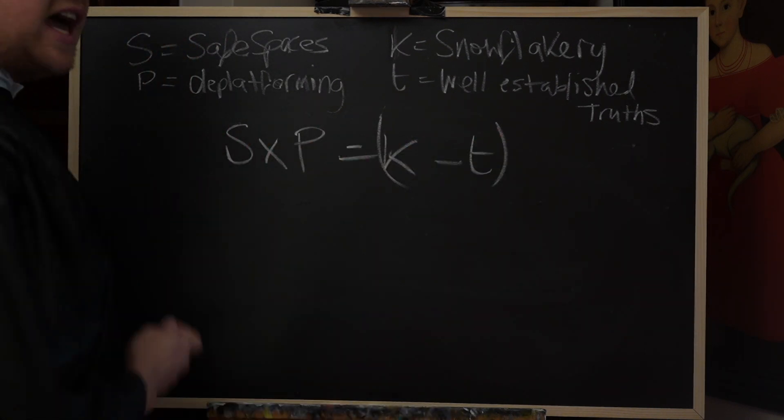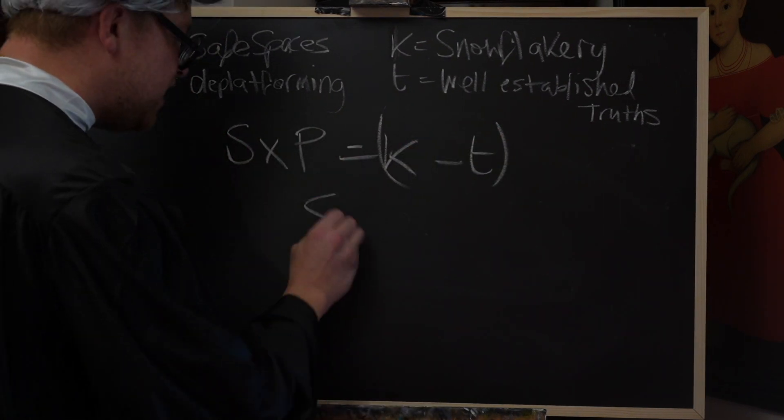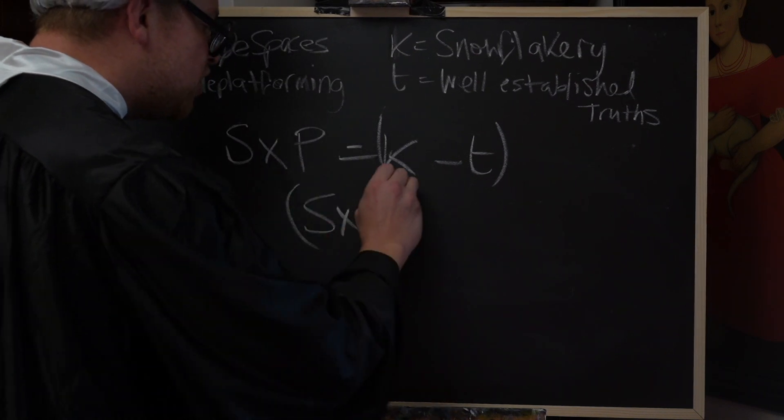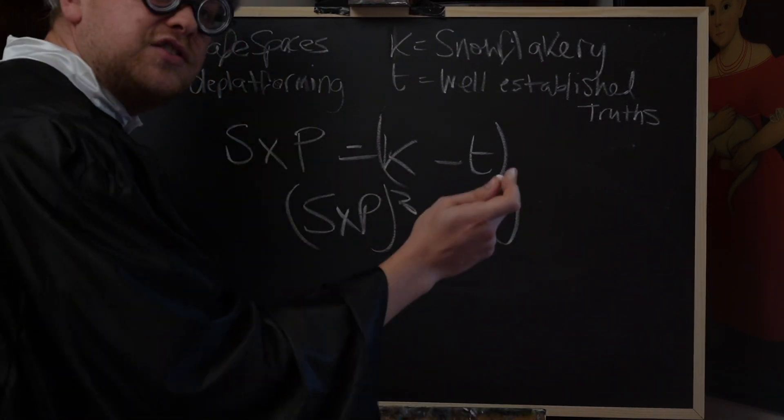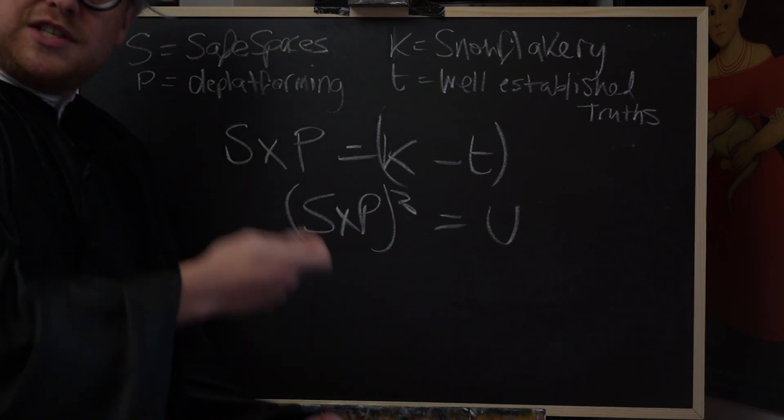Then we can take either side of this equilibrium, we'll take the S by P, and then we cube the answer. That will equal U, an extremely unsafe space for the rest of us.